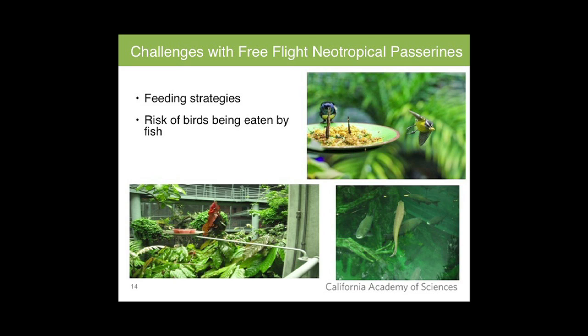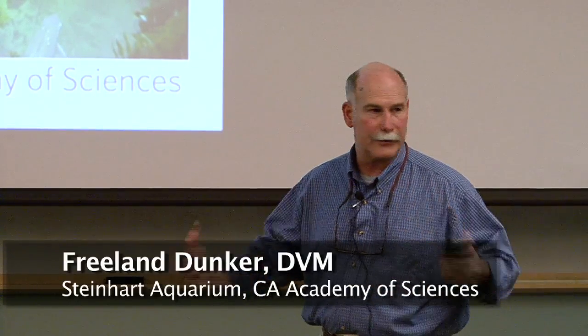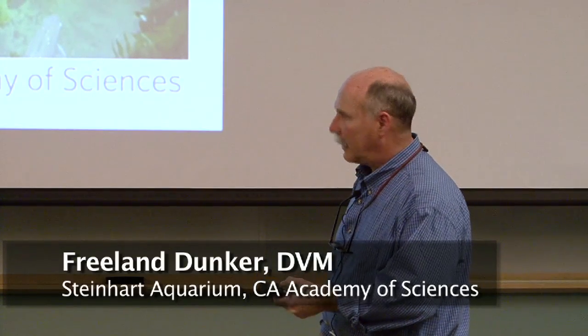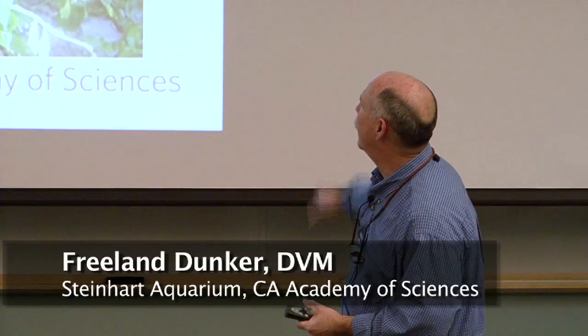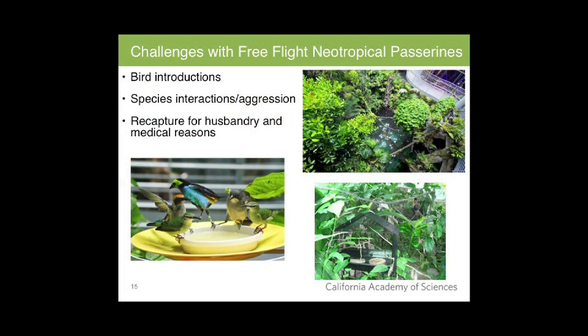To address this, there is a nylon net that can be placed over the water. During introductions of new species, the nylon net is deployed to provide a barrier of protection against the fish. During breeding season, when we have a lot of fledglings, we place the net again so it forms a barrier preventing the fish from reaching them.